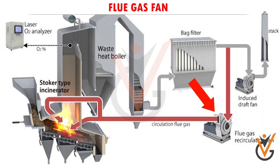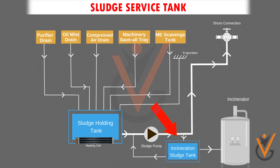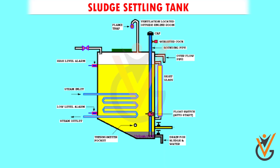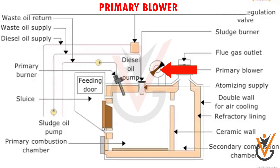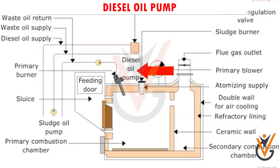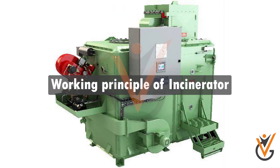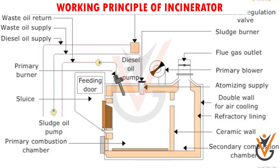Flue gas fan, which may be fitted with a flue gas damper or frequency inverter. Sludge service tank with a circulating pump and heater. Sludge settling tank with filling pump and heater. Optional primary blower is used for sending combustion air into the incinerator. Diesel oil pump.